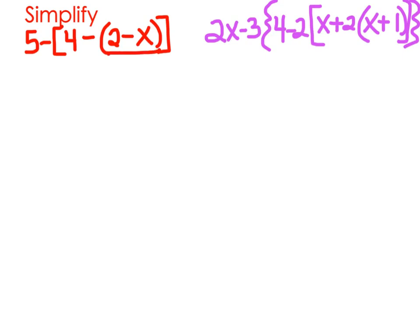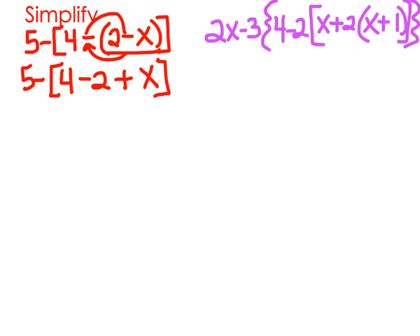So we're going to do 2 minus x first. There's nothing we can simplify within that parenthesis, so we're going to multiply everything in that parenthesis by that negative sign. So now I have 5 minus bracket, 4, then minus 2, and then minus minus x, which becomes plus x. Be very careful - you're going to see this a lot in algebra 2. You're going to see a minus in front of a group, so make sure that you always distribute it to both terms.